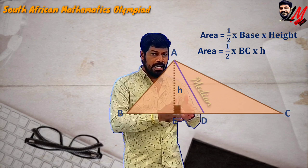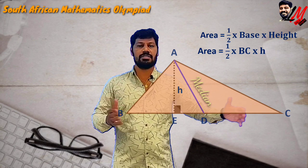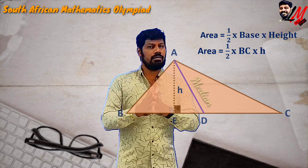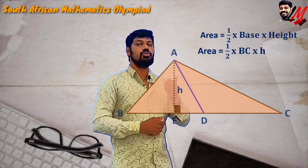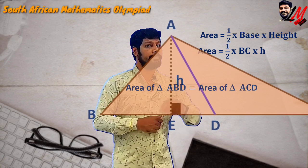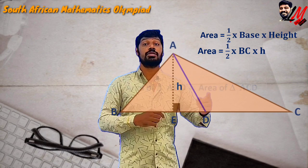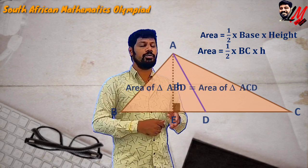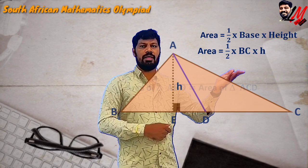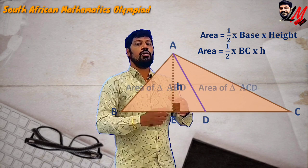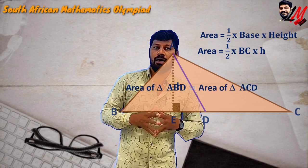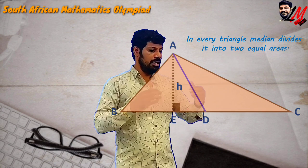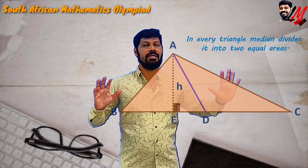On joining the median, the entire base is divided into two equal halves. The entire triangle is also divided into two different triangles. These two triangles need not be congruent always, but definitely their areas are going to be equal. Why? Because for these two triangles, the height is common and the bases are equal, since D is the midpoint. So the simple statement we learned is: in every triangle, a median divides it into equal areas.